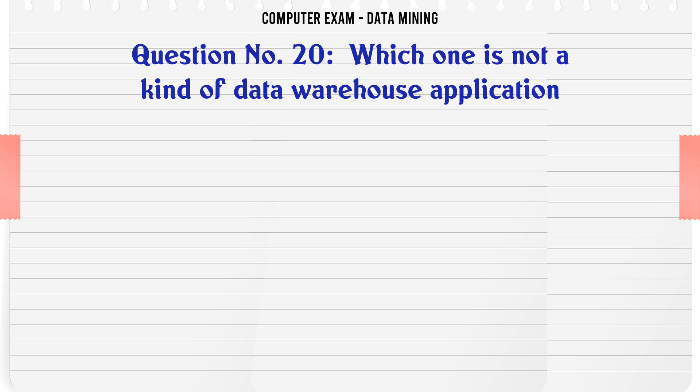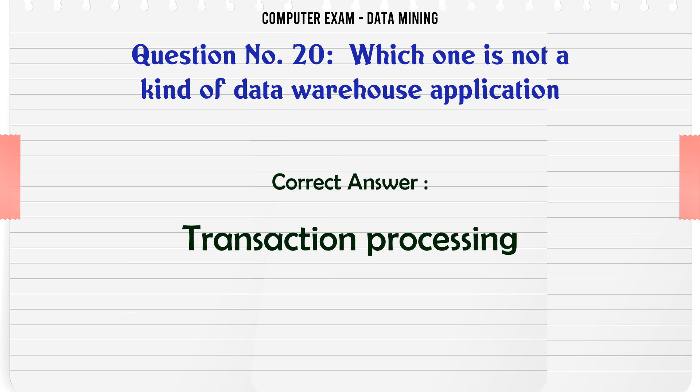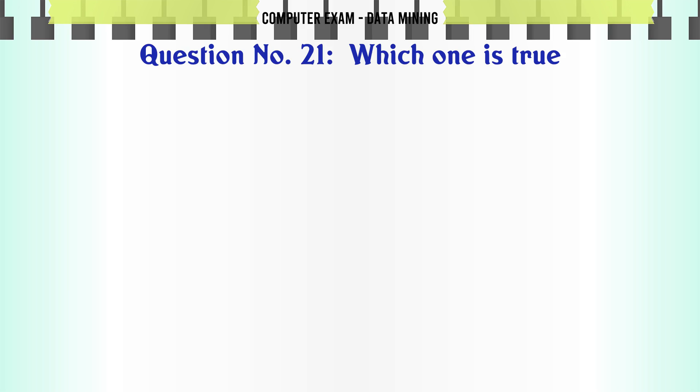Which one is not a kind of data warehouse application? A. Information processing. B. Analytical processing. C. Transaction processing. D. Data mining. The correct answer is Transaction processing.